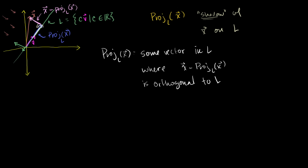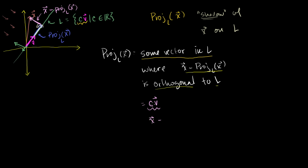How can I actually calculate the projection of x onto L? The key clue is this notion that x minus the projection of x is orthogonal to L. Because the projection of x onto L is some vector in L, that means it's some scalar multiple of V — some scalar multiple of our defining vector. So we could rewrite our projection of x onto L as some scalar multiple c times our vector V. We also know that x minus our projection is orthogonal to L.